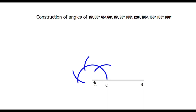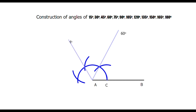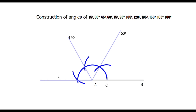Now join point A and the first point of intersection of arcs — a 60 degree angle is formed here. Then join point A and the second point of intersection of arcs — a 120 degree angle is formed here. Now join point A and the third point of intersection of arcs — a 180 degree angle is formed here.